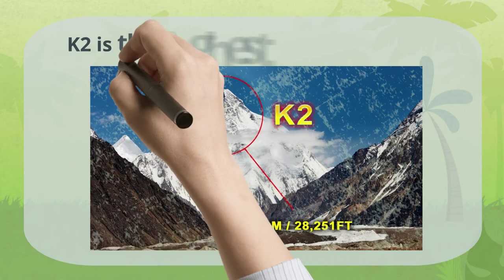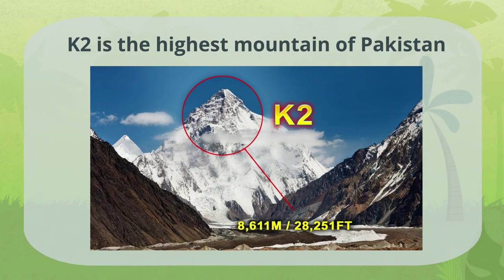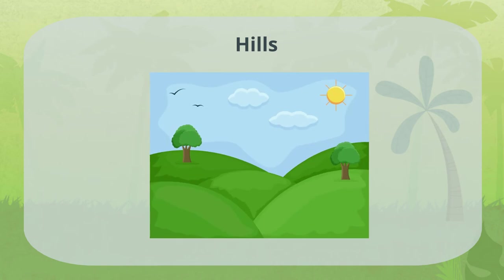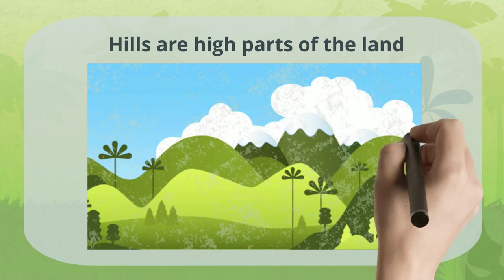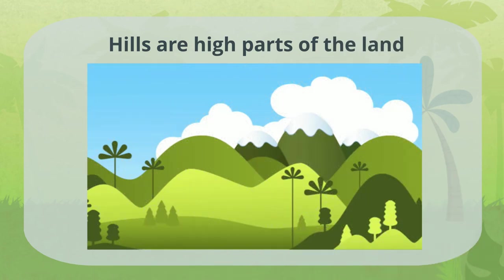K2 is the highest mountain of Pakistan and is second highest globally. Hills: Like mountains, hills are high parts of the land. However, they are not as tall or large in size as mountains. Their top part is also not as sharp as mountains — it is rather round in shape.